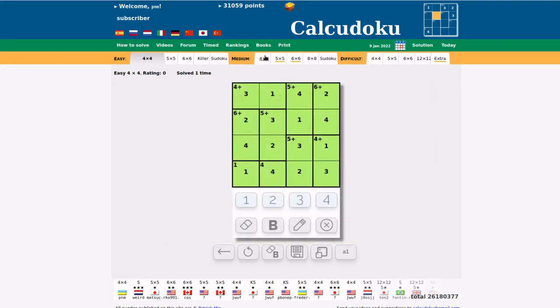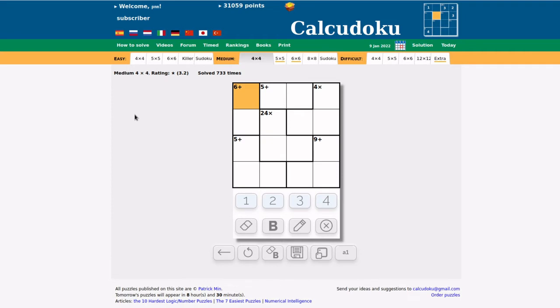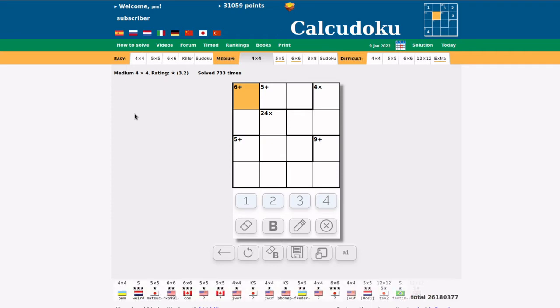Now we'll go to the medium, and this one's slightly trickier. There's no immediately obvious starting point. Here at the top left there's 6-plus, so this would have to be a 2 and a 4, we don't know yet in which order.